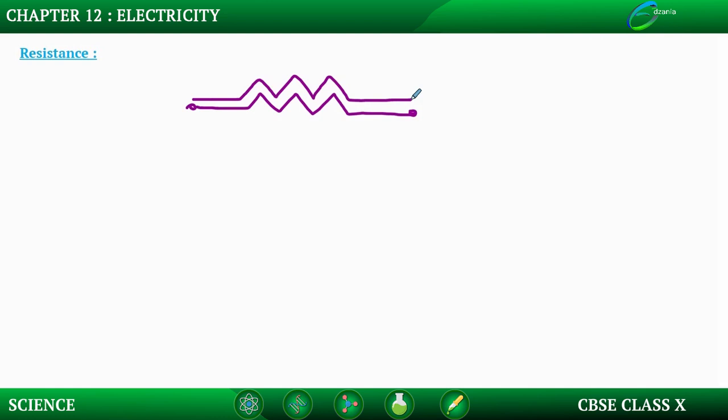In this process, the moving electron will lose some of its energy as well. So very simply, we can say that resistance of a conductor will depend upon its length.